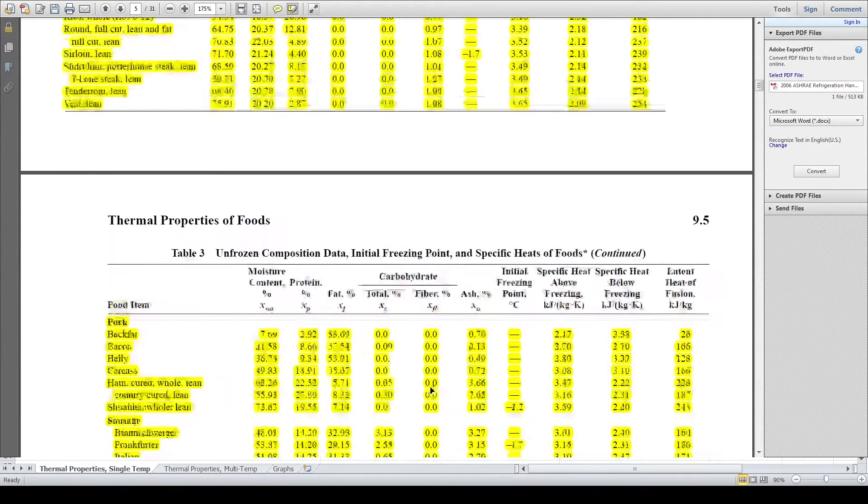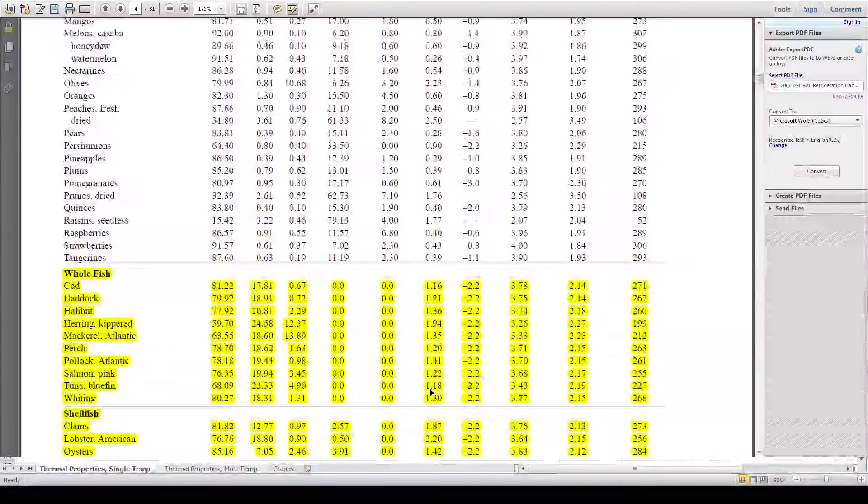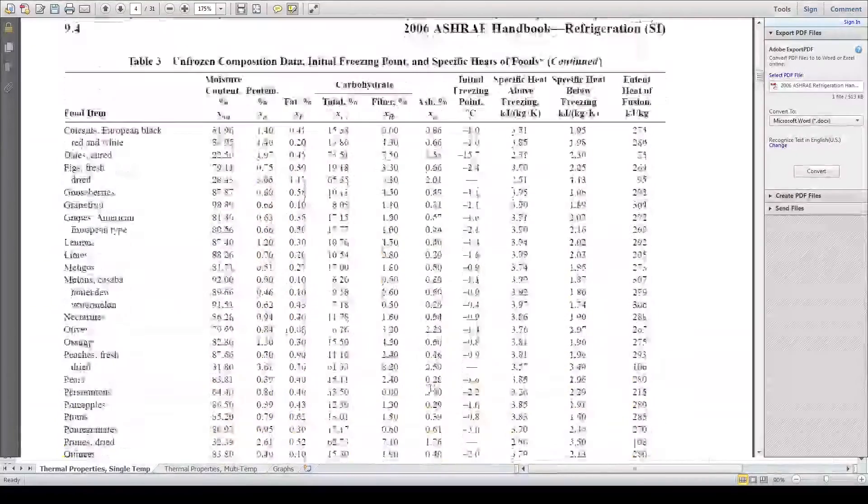In this handbook, data is provided for over 100 different foods, including vegetables, meats, fruits, dairy products, nuts, candy, and various juices and beverages.